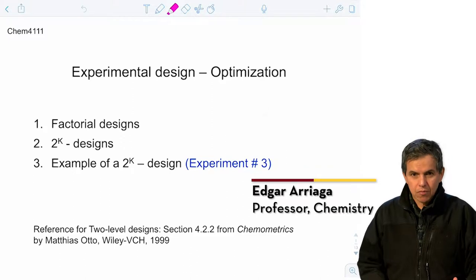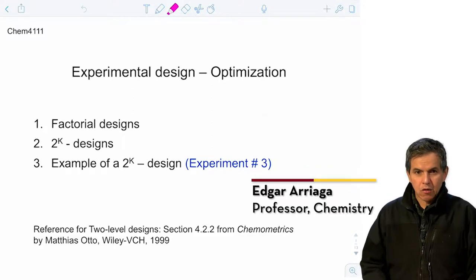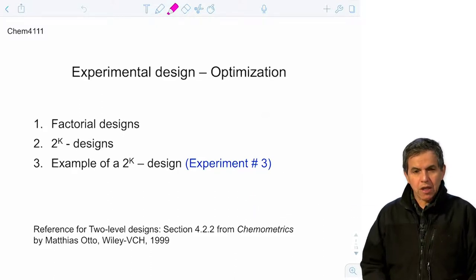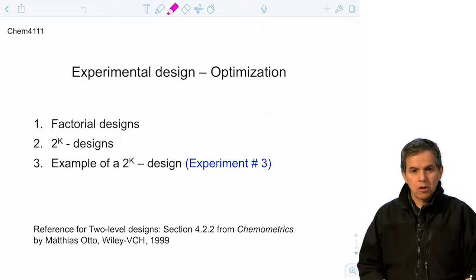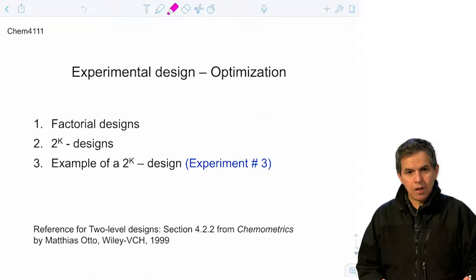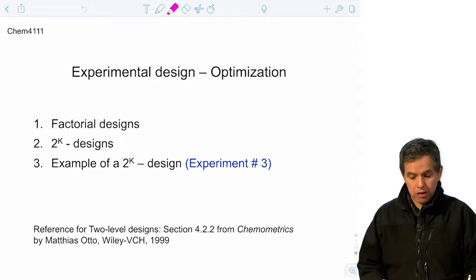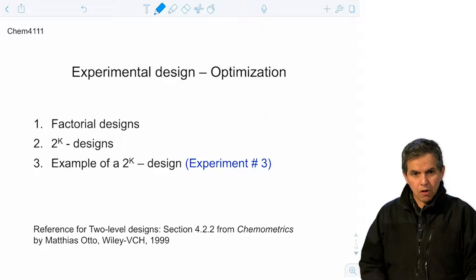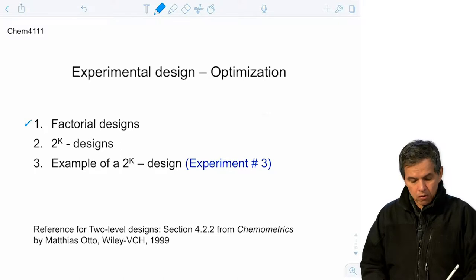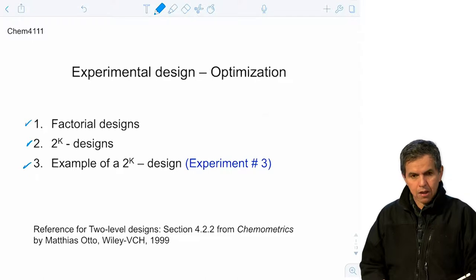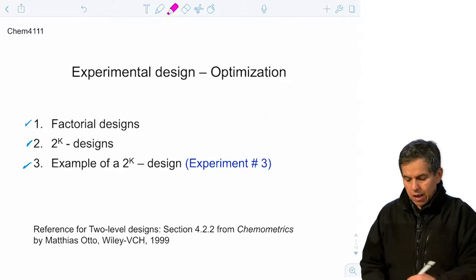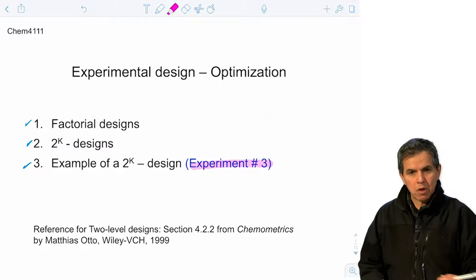Another way to optimize different experimental conditions or parameters is to use a factorial design. A factorial design refers to the ability to measure multiple conditions for each one of the cases and then decide from this grid of measurements what are the best conditions. Today we are going to discuss factorial designs, a specialized form called 2 to the k designs, and give an example of 2 to the k designs which is highly applicable to experiment 3, the experiment on voltammetry.